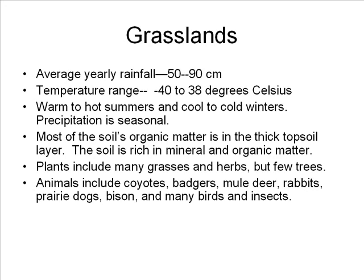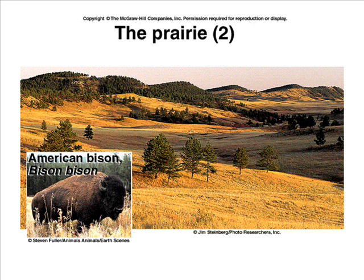Grasslands have an average yearly rainfall of 50 to 90 centimeters and a temperature range from negative 40 to positive 38 degrees Celsius. They typically have warm to hot summers and cool to mild winters. Precipitation is seasonal, and most of the soil's organic matter is found in the thick topsoil layer, which is very rich in minerals.